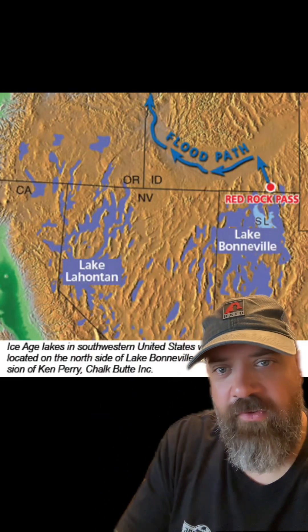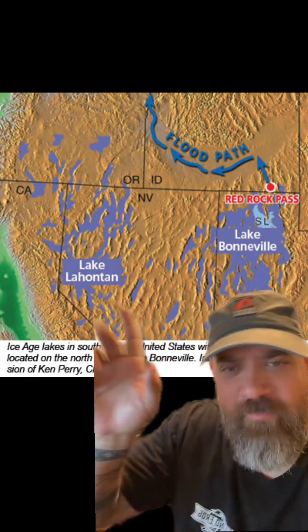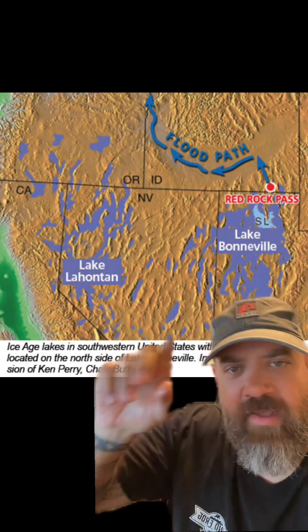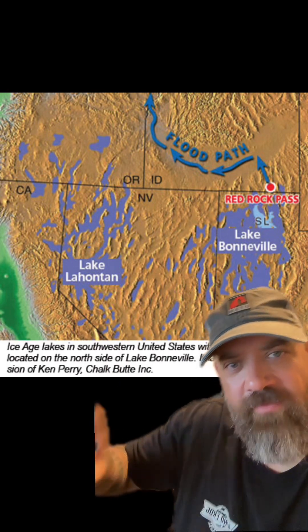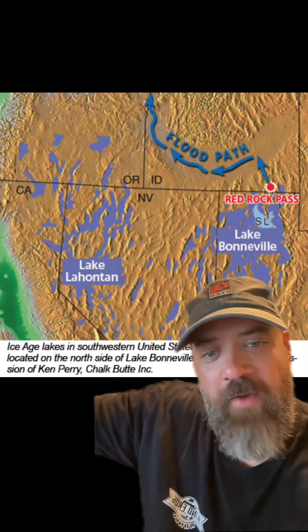30,000 years ago, you had Lake Lahontan in Nevada and Lake Bonneville in Utah. When it burst, it didn't go down to the southwest through Nevada — it went through Red Rock Pass and then followed the Snake River all the way out to the west coast. Now you have the Great Salt Lake and all of the salt flats. Part of it is global warming, evaporation, and Lake Bonneville bursting, collapsing, flooding, and draining the whole basin out.